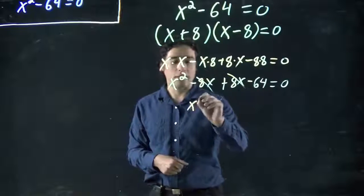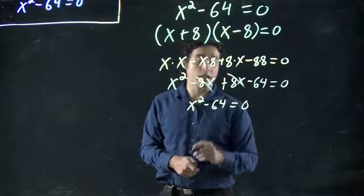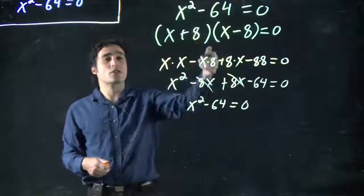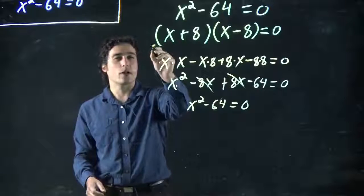So what are we left? x squared minus 64. So sure enough, we did solve it right. And again, this is just a trick that we can remember. But, as always, we actually didn't solve the question.